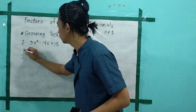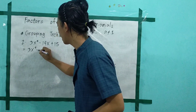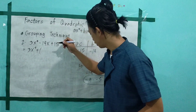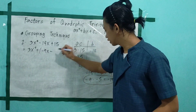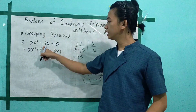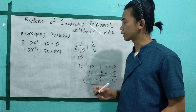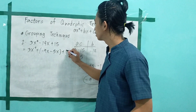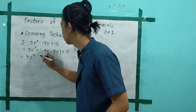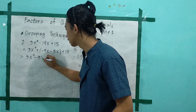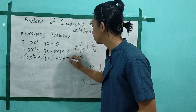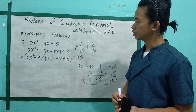So we rewrite the expression. We have 3x squared, and instead of negative 14x, we use our factors. So we write negative 9x minus 5x, then plus 15. So our expression is now 3x squared minus 9x minus 5x plus 15. Apply the grouping technique.